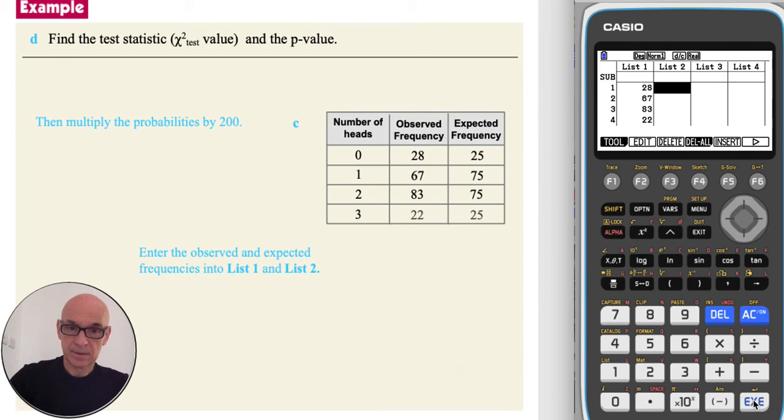And the expected ones in list 2 are 25, 75, 75, and 25.